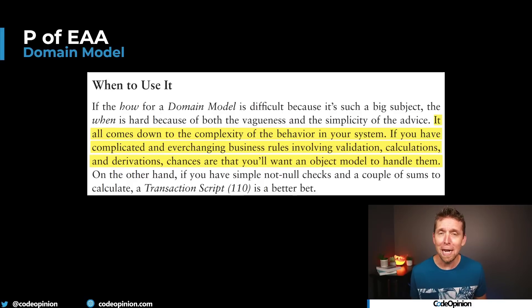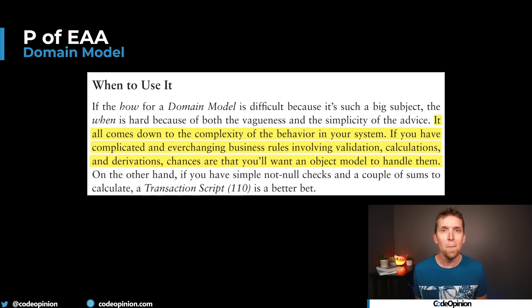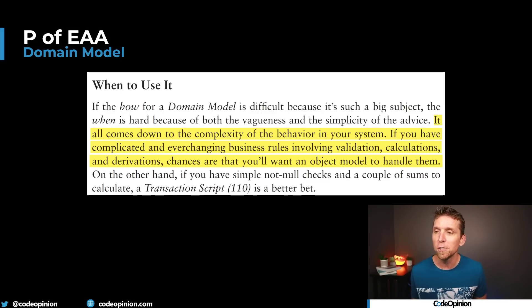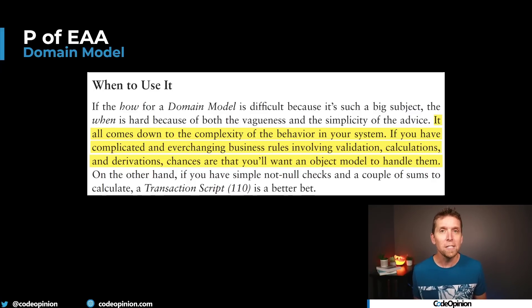Some would call this business logic but I really call it trivial logic. What is this — is this really a domain model? Well a domain model is really just an object model. It's a collection of related entities and value objects composed of both data and behaviors, encapsulating that data and exposing behaviors, incorporating your ever-changing business logic. This comes from Patterns of Enterprise Application Architecture. When to use a domain model comes down to the complexity of the behavior in your system — complicated and ever-changing business rules involving validation, calculations, etc.